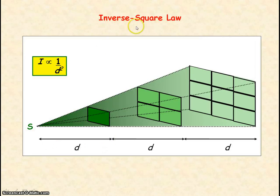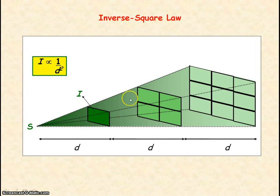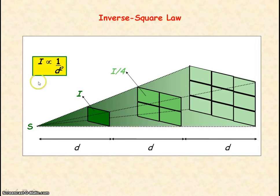For an inverse square law: at distance d, we have an intensity of I. If we double the distance, we'll have 1 divided by 2 squared — so a quarter of the intensity. If we have three times the distance, we'll have 1 divided by 3 squared — so one ninth of the intensity.